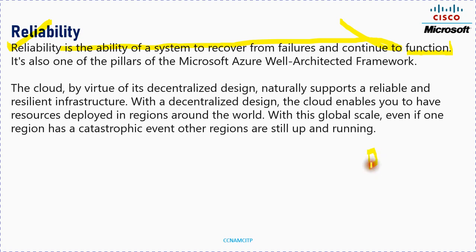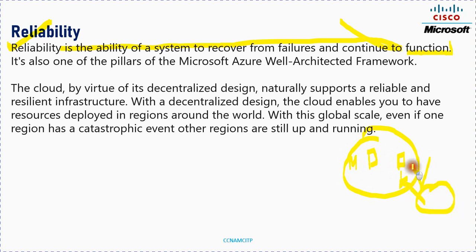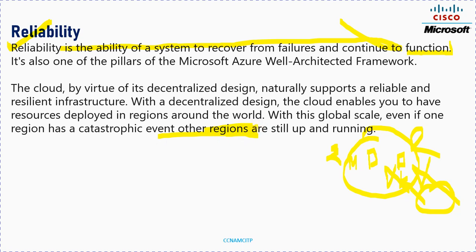For example, if I am in India and I have one data center in Mumbai and one in Calcutta, even if my Calcutta data center is down, my resource will still be available from Mumbai. So even if one region fails, your data will be available and accessible from another running region. That is the guarantee given by Azure.